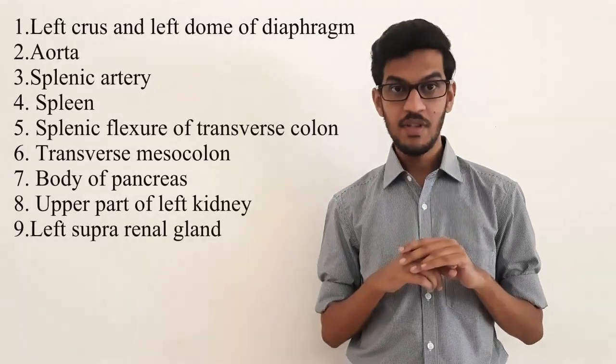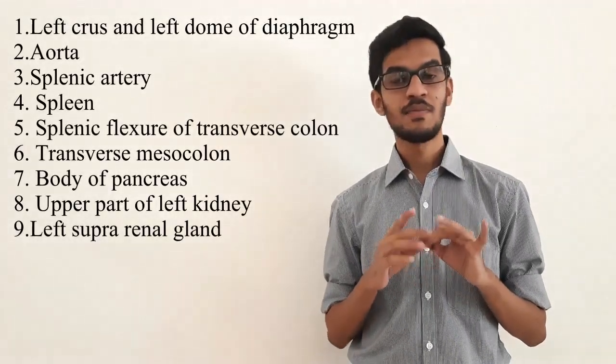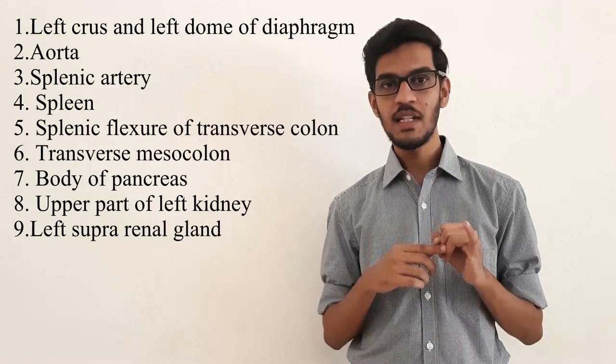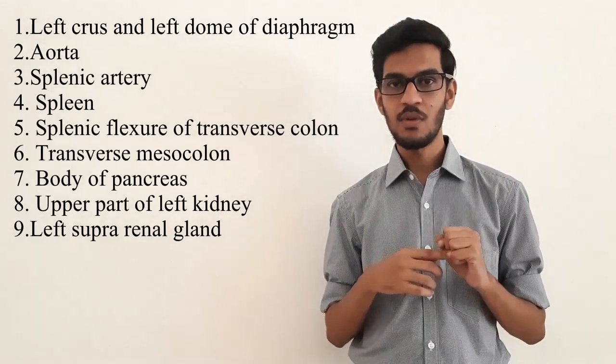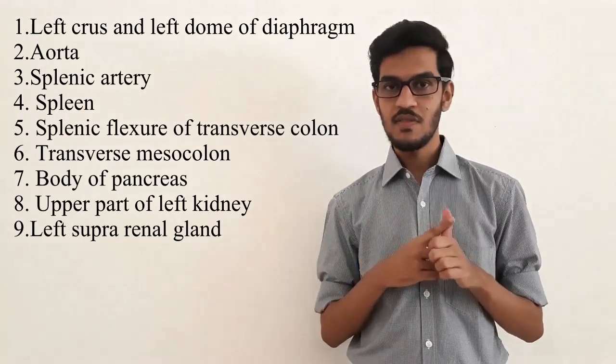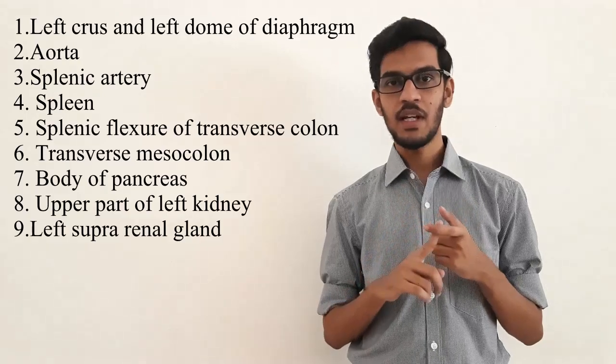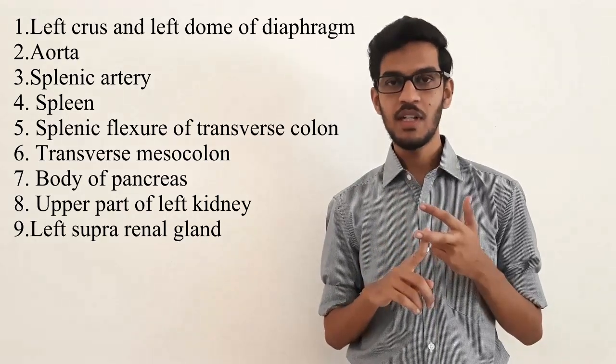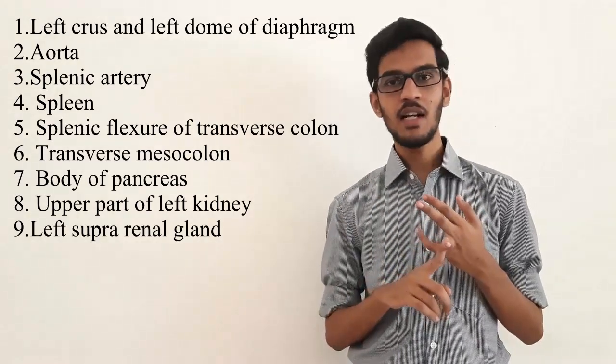The structures behind the stomach form the stomach bed. They are left dome and left crus of diaphragm, aorta, splenic artery, spleen, splenic flexure of colon, transverse mesocolon, body of pancreas, upper part of left kidney, and left suprarenal gland.